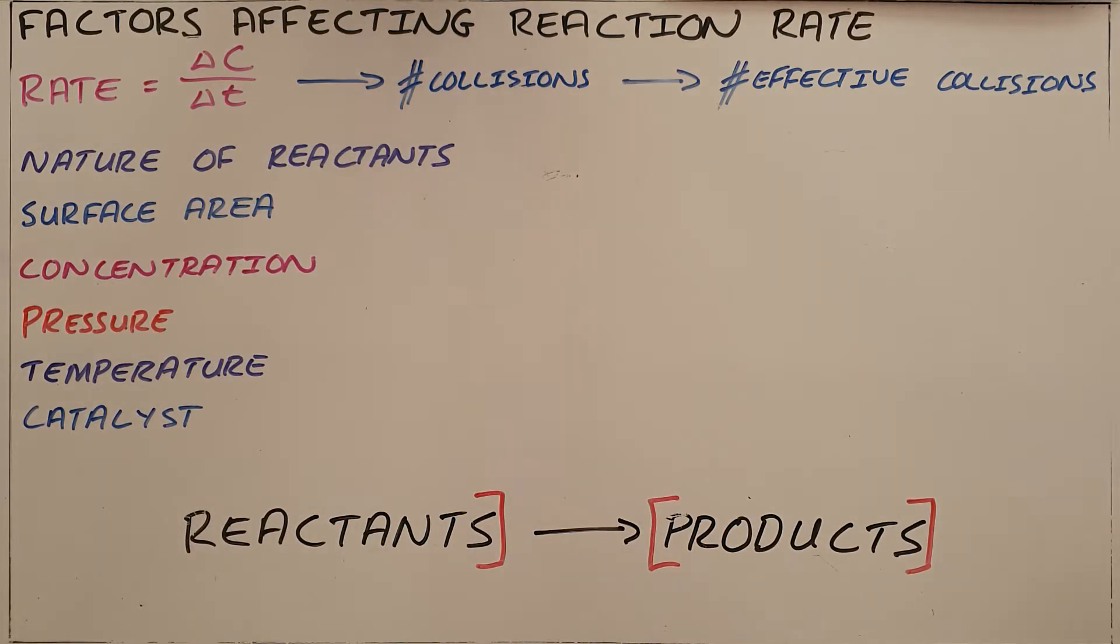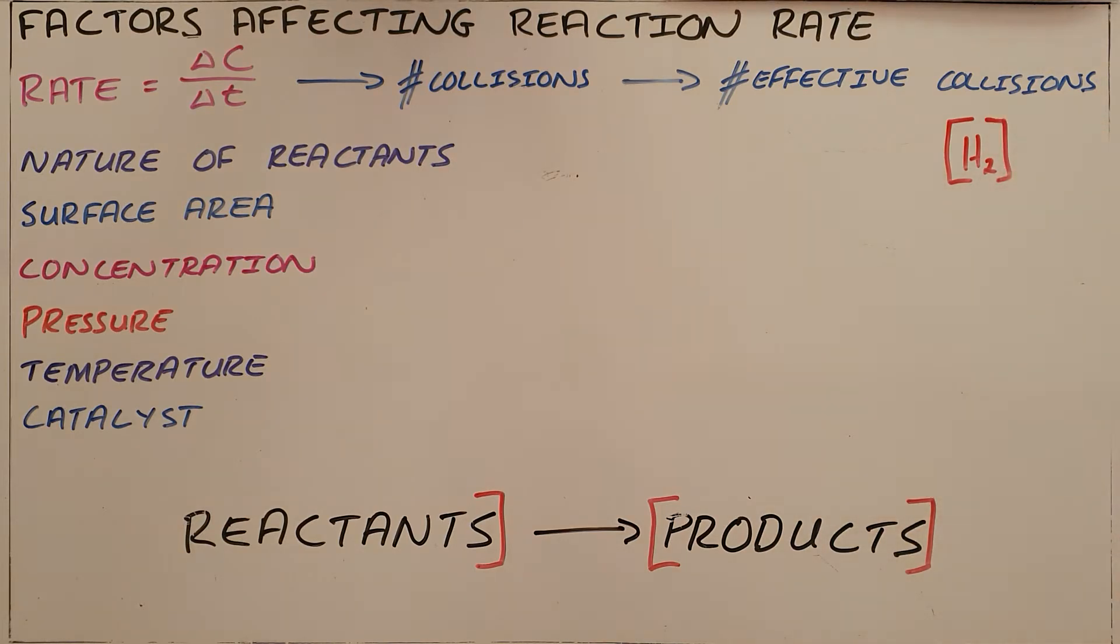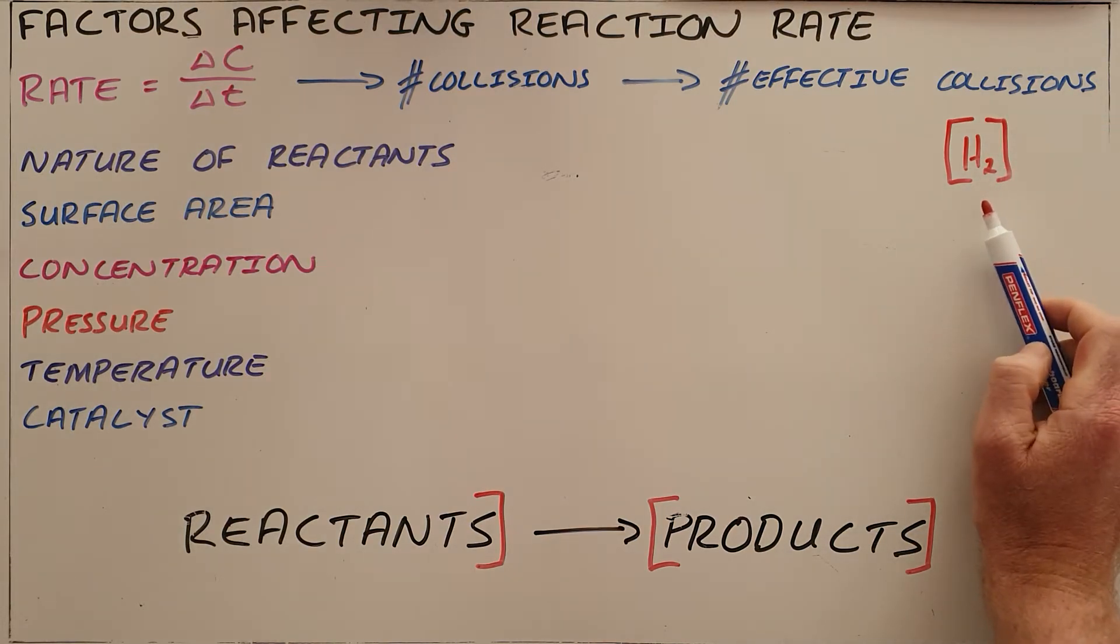When we define the rate of a reaction, the first thing is we need to understand some notation. When something is drawn in square brackets, it refers to the concentration of that substance. So this over here would be read as the concentration of hydrogen.